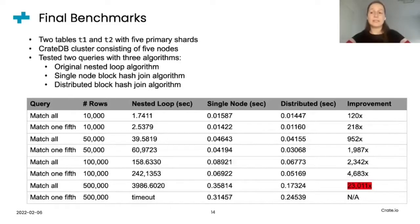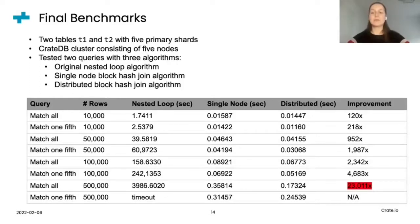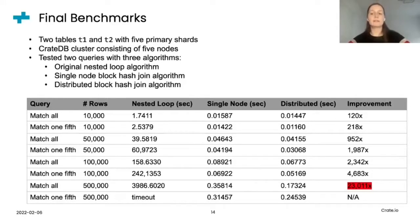Finally, we completed the implementation of the distributed block hash join algorithm. To assess its performance, we did a final set of benchmarks using the same setup as before. We considered two tables, T1 and T2, with five shards, one query that joins all rows from both tables and one query that joins one fifth of rows. We compared the performance of three algorithms: the original nested loop algorithm, the single-node block hash join algorithm, and the distributed block hash join algorithm. As we can see in the table, in all cases the distributed block hash join outperforms the other algorithms significantly. When considering a query that matches all half a million rows, the performance improvement of distributed block hash join is more than 23,000 times faster than the original nested loop implementation, as we advertise in our title.